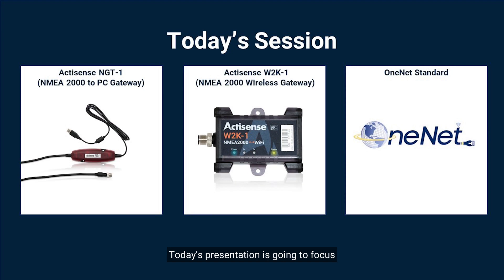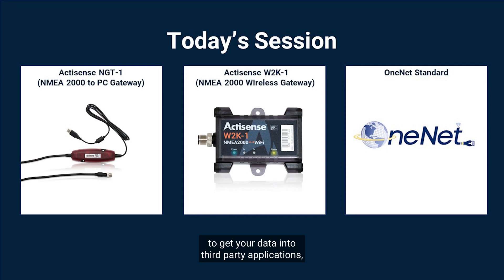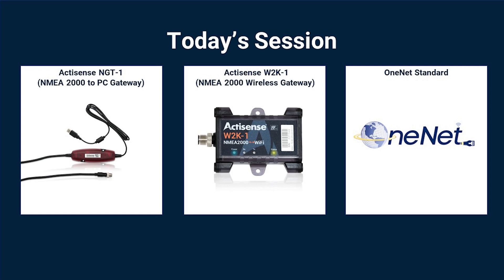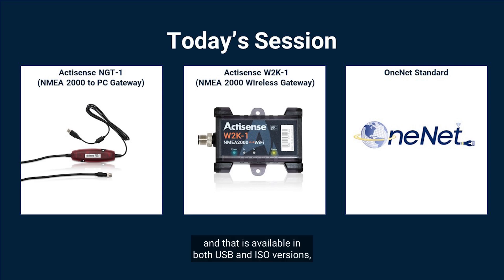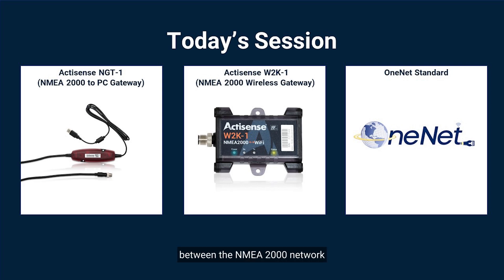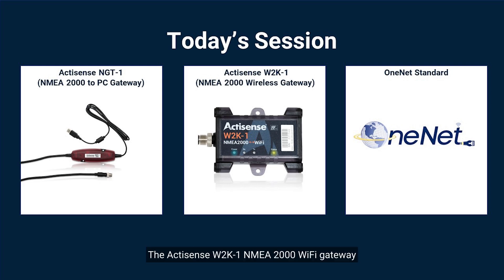Today's presentation is going to focus on two of our products and how they can be used to get your data into third-party applications both on your PC as well as wireless devices. Firstly we'll look at the ActiSense NGT1 NMEA 2000 PC gateway device, available in both USB and ISO versions, used for bi-directional sharing of data between the NMEA 2000 network and a PC. The ActiSense W2K NMEA 2000 Wi-Fi gateway also allows for wireless connectivity to a wide range of applications on mobiles and tablet devices.